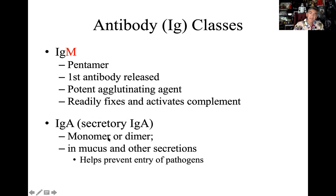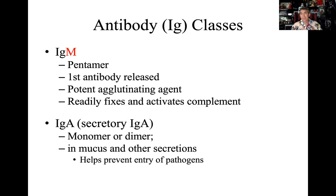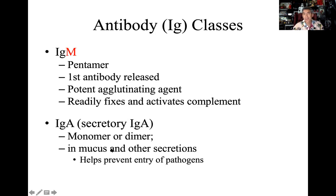IgA is a separate class. It can exist in the monomeric or dimeric form. IgA is sometimes known as secretory IgA because we find it in body secretions — mucus and other types of secretions. It's going to be on the mucous membranes that serve as first-line defenses, part of the innate system. So the innate and adaptive systems are highly integrated — the humoral response links back to the innate system through secretory IgA.